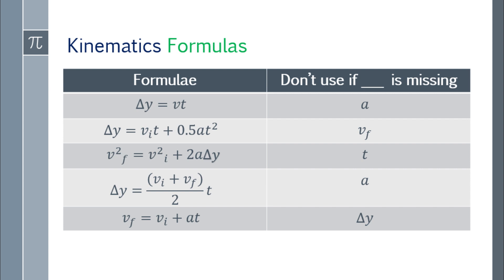To know which formula to use: don't use the first formula when finding acceleration. Don't use the second when finding final velocity. Don't use the third when finding time. Don't use the fourth when finding acceleration. And don't use the fifth formula when finding delta y.